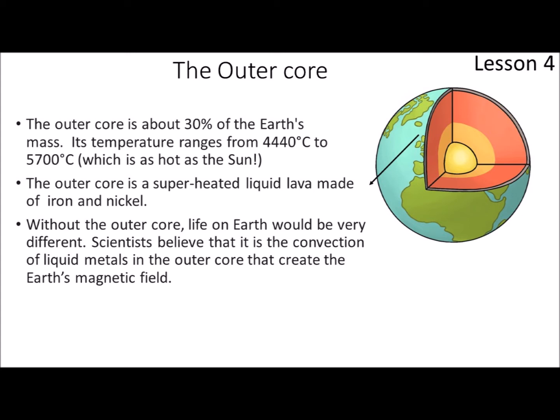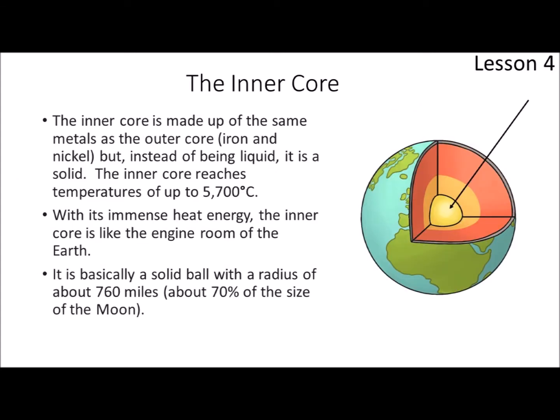Moving down further into the centre, the last part we're going to look at is the inner core — right down into the very centre of the earth. It's made up of the same metals as the outer core, which were iron and nickel, but instead of being liquid, it is solid. The inner core reaches temperatures of up to 5,700 degrees, again the same temperature as the sun. With its immense heat energy, the inner core is like the engine room of the earth. It's basically a solid ball with a radius of about 760 miles or 1,200 kilometres, and it's about 70% the size of the moon.